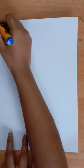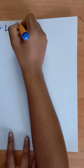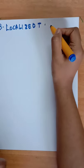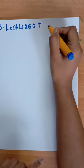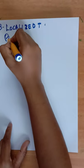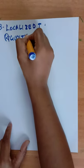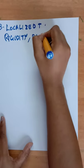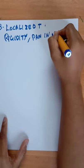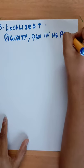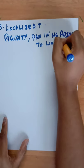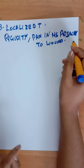Localized tetanus is less severe in comparison to the other two and is characterized by rigidity and pain confined to the muscles adjacent to the wound. It may lead to generalized tetanus later.